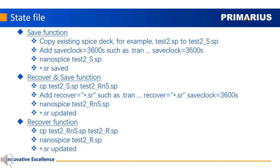Here is the flow for using the state file by save clock command. Copy the existing SPICE netlist and add save clock equal to 3600 to the dot tran statement. When a simulation is run, the simulator will save the state file every hour. For the recover function, add recover to use the state file from the save function simulation. When the simulation resumes, the simulator will update the state file. Save Recover functions can occur multiple times.